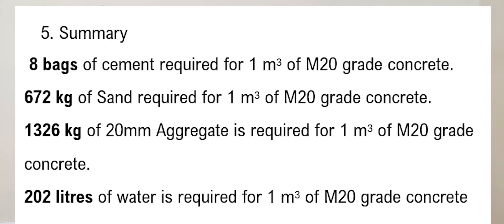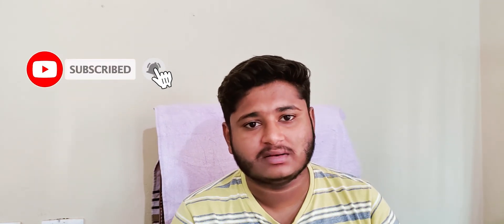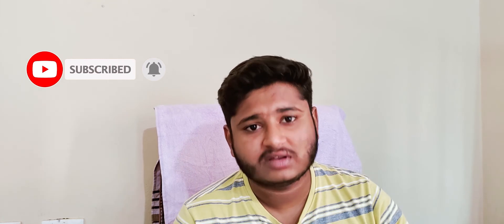In summary, for 1 cubic meter of M20 concrete: 8 bags of cement, 672 kg of sand, 1326 kg of 20 mm aggregate, and 202 liters of water are required. In a similar way, you can easily find the quantity of materials for any grade of concrete. If this video was useful, please share, subscribe, and comment if you have any doubts. Thank you for watching and see you in the next video.